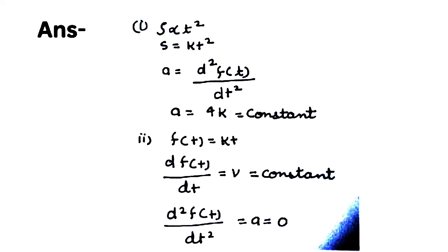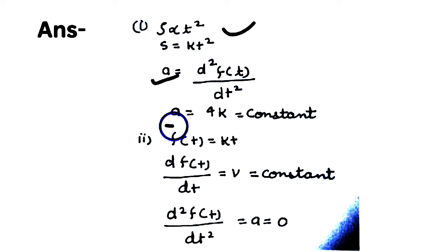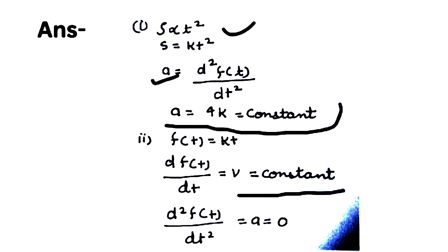For Statement 1: displacement s is directly proportional to t-squared. Applying the formula d²s/dt², the acceleration comes out to be constant — so Statement 1 is correct. For Statement 2: if position is s = kt, then velocity is constant and acceleration is zero. So Statement 2 is also correct.